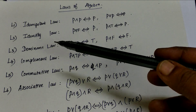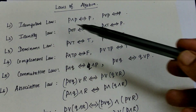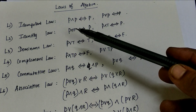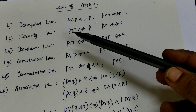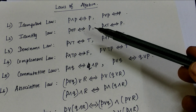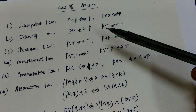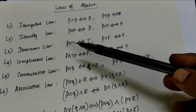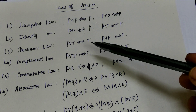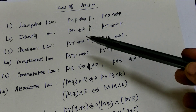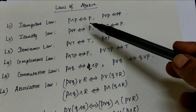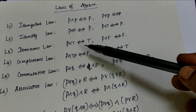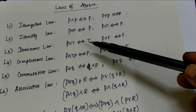In identity law and dominant law, we get the conjunction and disjunction between the truth values. In identity law: P or F is P, and P and T is P. In dominant law: P or T is T. In identity law, the statement will be the answer, whereas in dominant law, the truth value will be the answer.